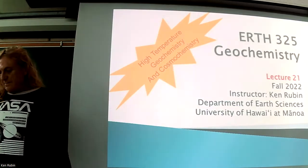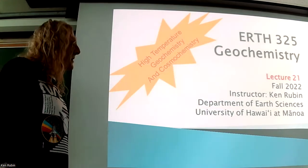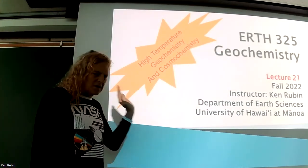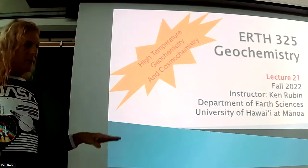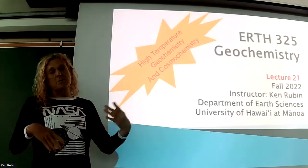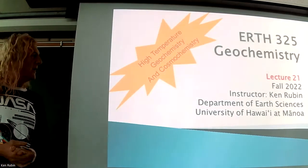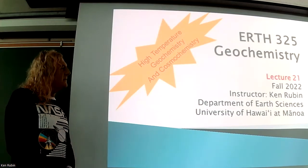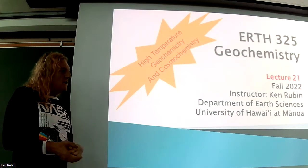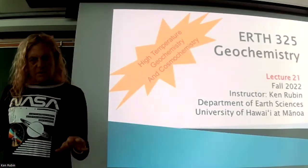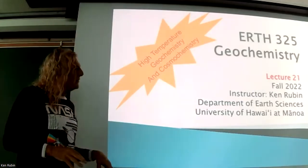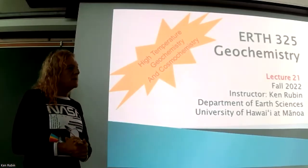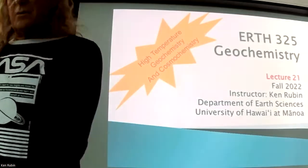We're starting the last part of the class: high temperature geochemistry and cosmochemistry. This week and next we'll be talking about things we call continental chemical. Today we'll talk about the origin of the elements and some timescales for the development of the solar system and the universe. Then we'll cover the building blocks of the solar system and Earth, and spend a lot of time on differentiation of Earth, evolution of Earth, igneous processes, and so on.